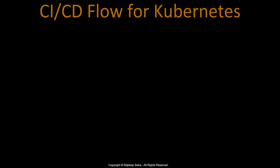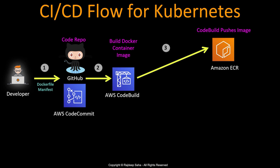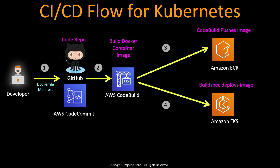To understand the future we must study the past. Let's start with our good old DevOps — how does a CI/CD flow for Kubernetes look like? Your developer checks in the code in a code repository such as GitHub or AWS CodeCommit. For Kubernetes we mainly mean two things: first, the Dockerfile which defines the container image, and second, the manifest which defines the deployment, scaling, and other configuration. Once the code is checked in, a build process starts — in this example we are using AWS CodeBuild, which builds the Docker container image and pushes it to a repository such as Amazon ECR.